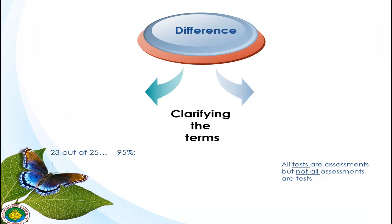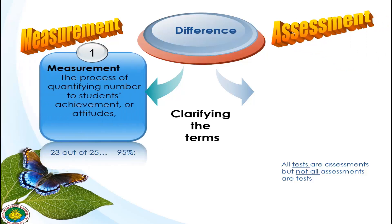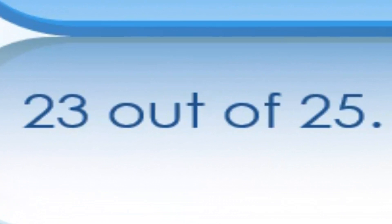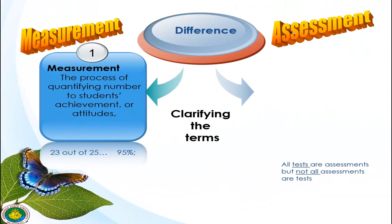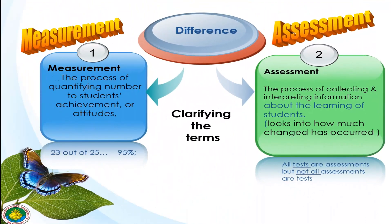Let us differentiate measurement from assessment. When you say measurement, it is the process of quantifying the number of students' achievement or attitude. For example, we have 23 out of 25, or 95 percent. When you say assessment, it is the process of collecting and interpreting information about the learning of students. We are simply looking into how much change has occurred. Remember, all tests are assessments, but not all assessments are tests.